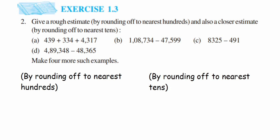Here's a question from Exercise 1.3, second question, from the 'Knowing Numbers' chapter of Class X. This concept you might have learned in lower classes but we still have a question to solve. Give a rough estimate by rounding off to nearest hundreds, and also a closer estimate by rounding off to nearest tens. So we're going to round off to nearest hundreds and nearest tens. I have written both headings here.